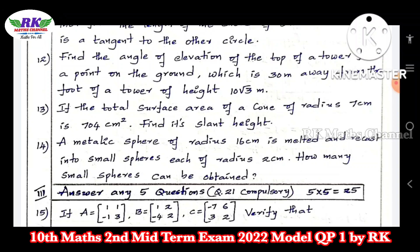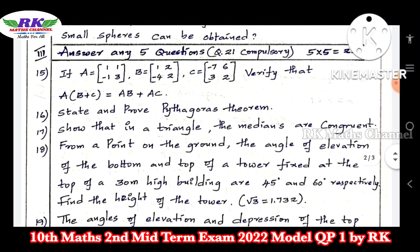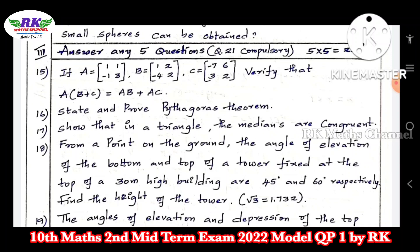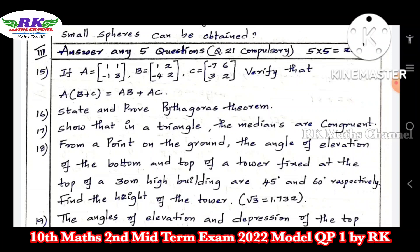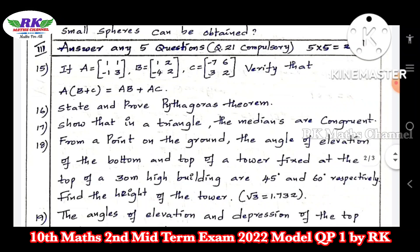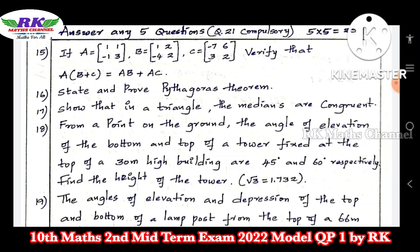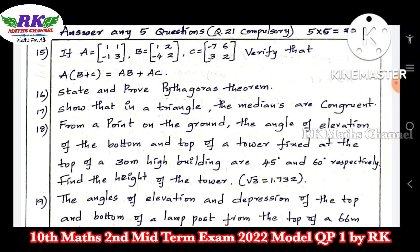Total 7 questions, you have to do any 5. Question number 14 is the compulsory question. Question number 21 is also compulsory. First: for matrices A, B, C — prove A(B + C) = AB + AC. Next: state and prove Pythagoras theorem. Also show that in this triangle the medians are congruent — this is a concurrence theorem concept.